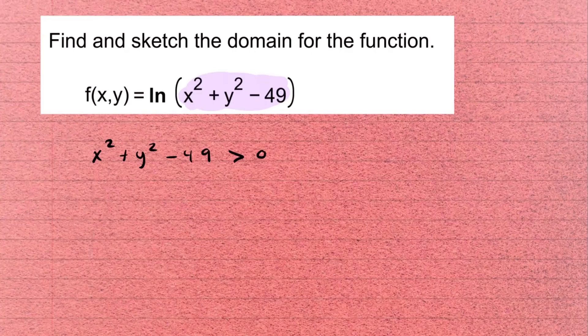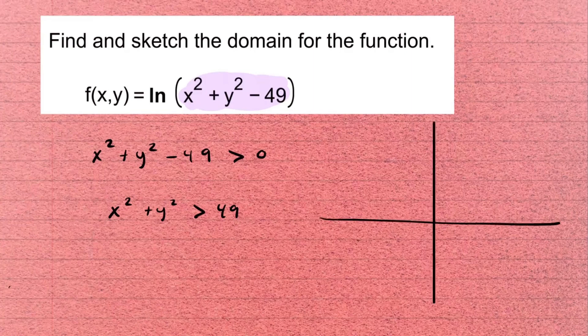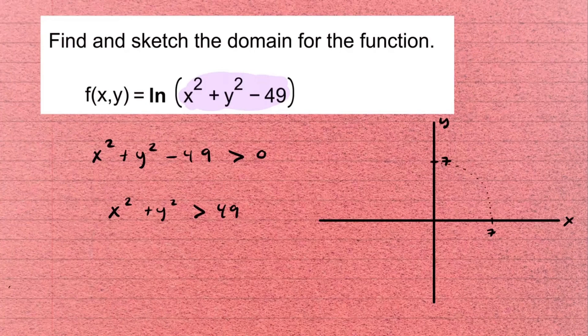Adding 49 to both sides gives x² + y² > 49. We recognize this as a circle of radius 7. In the xy-plane, the domain is the set of points outside this circle, centered at the origin with radius 7. The boundary is not part of the domain because we cannot have zero as the input of ln.